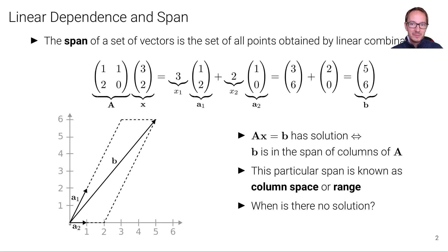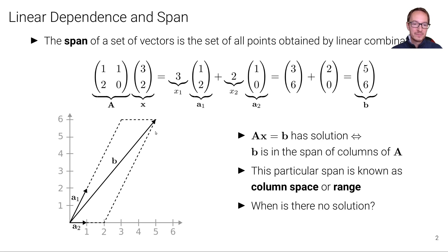Here on the left we have an illustration. The first column vector of A is (1, 2) and the second vector is (1, 0). The vector b is (5, 6), the result of multiplying a1 by 3 and then adding a2 times 2. If we change the scalars, we modify where the resulting vector b lands. We can also choose negative values, which will take b to the other side of the x-coordinate axis.